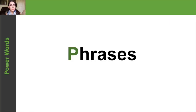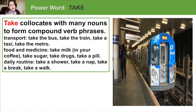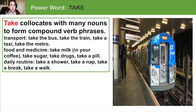Now let's look at some phrases with the word take. Take collocates with many nouns to form compound verb phrases. Collocates means it goes together with. Here are some examples: take the bus, take the train, take a taxi, take the metro. These are examples of take collocating with different types of transportation.